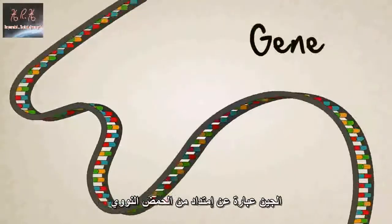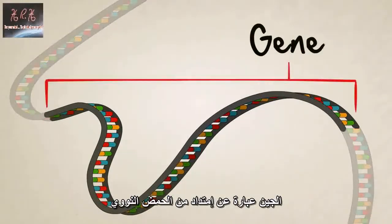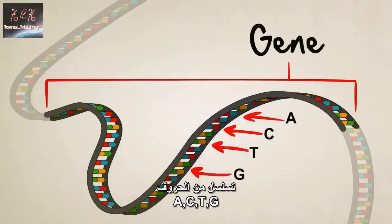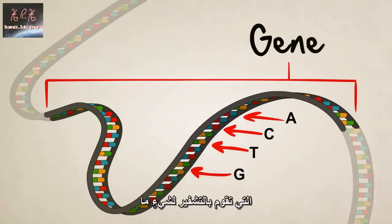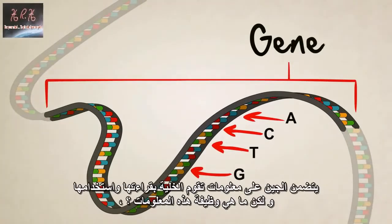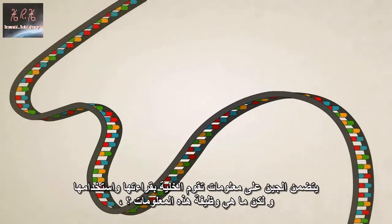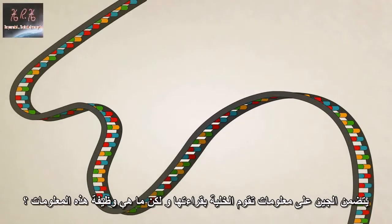A gene is a special stretch of DNA — a sequence of A's, C's, T's, and G's that code for something. A gene contains information for a cell to read and use, but what exactly does that information do?